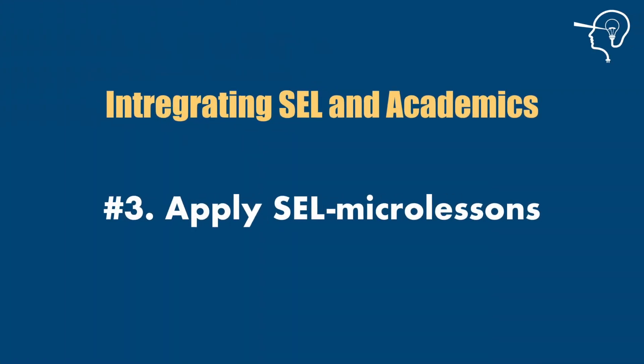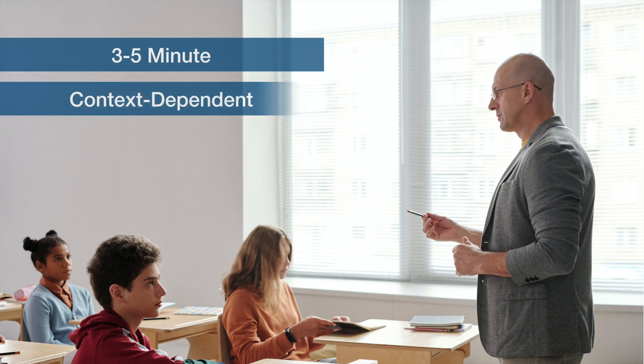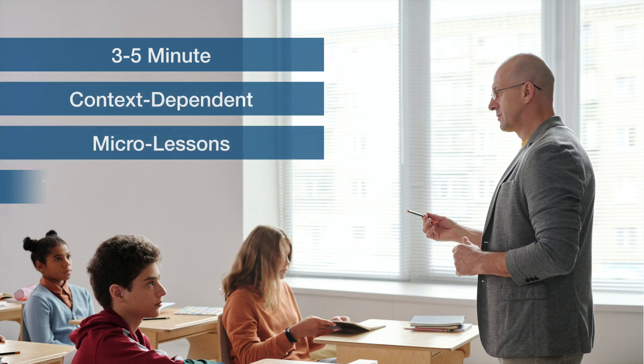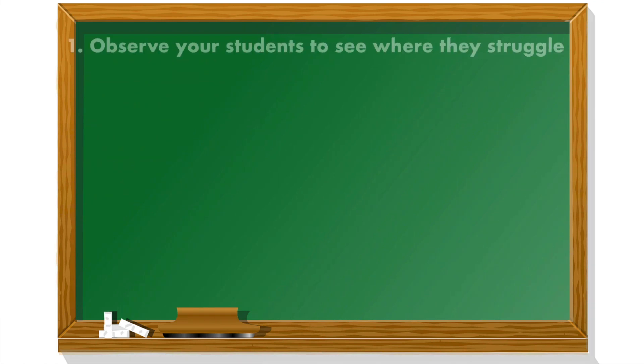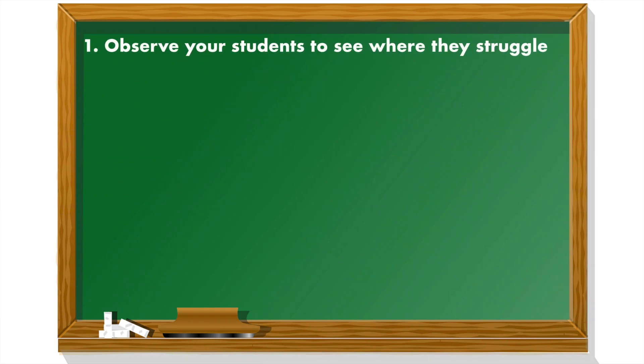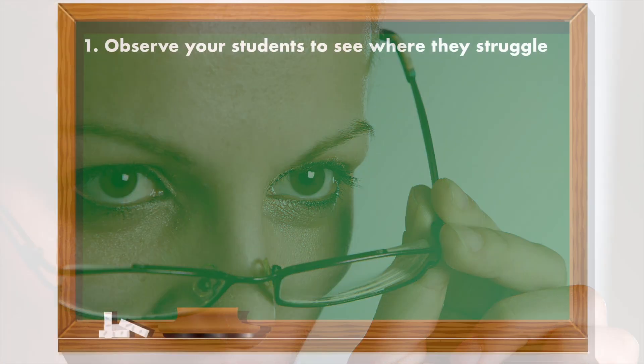Number three: SEL micro-lessons. These are three-to-five context-dependent micro-lessons that teach a specific skill that students need in order to succeed at learning. Step 1: Observe your students. During the lesson, see where students are getting stuck — academically or even behaviorally. Are they getting along well? Discussing the information? Or getting off task? Are they persevering? How do they handle mistakes? Wherever they're stuck will be glaringly obvious to you, and it will signify the need to teach a specific SEL skill.